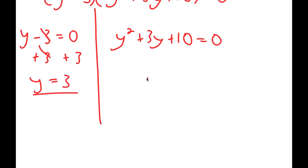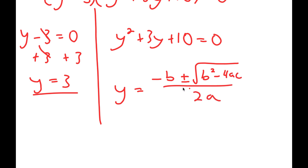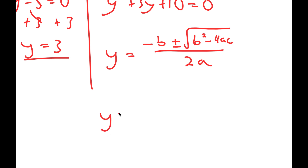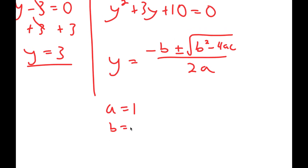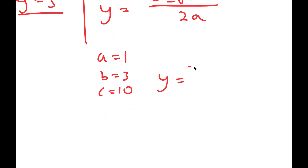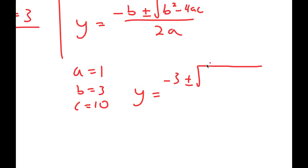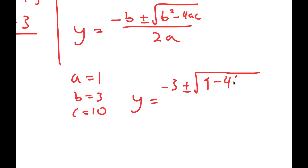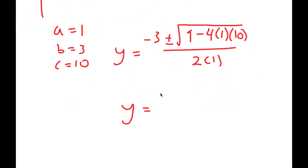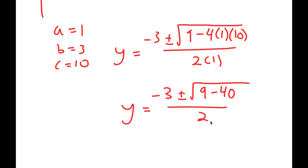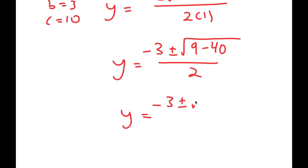For y squared plus 3y plus 10 equals 0, I'm going to use the quadratic formula to solve this, which is negative b plus or minus the square root of b squared minus 4ac all over 2a. In this case, a is 1, b is 3, and c is 10. So I get y equals negative 3 plus or minus the square root of b squared, which is 9 minus 4 times a, which is 1, times c, which is 10, all over 2a, so 2 times 1. And this is equal to negative 3 plus or minus the square root of 9 minus 40 over 2, which is equal to negative 3 plus or minus the square root of negative 31 over 2.